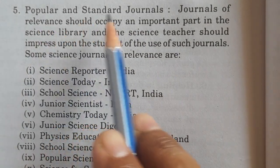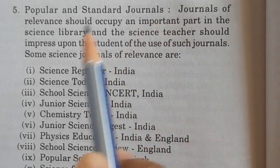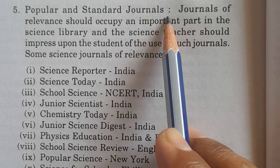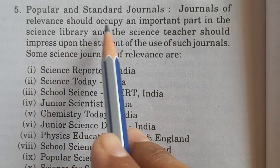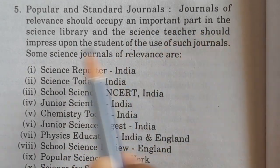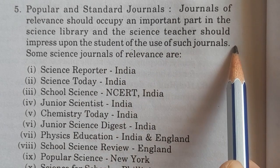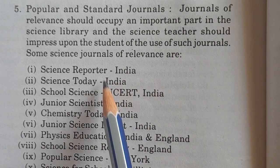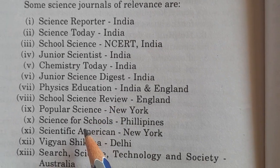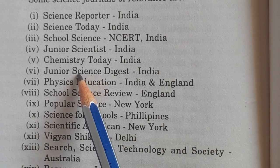Then there are popular and standard journals — important and well-known journals that will have their own section. Journals of relevance should occupy an important part in the science library, and the science teacher should impress upon the students the importance of reading such journals and encourage them.